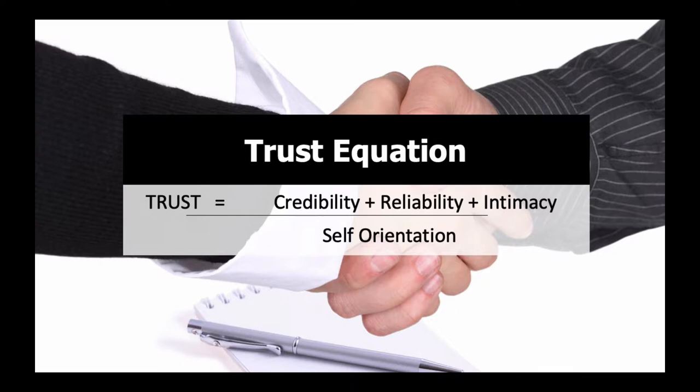The second factor is reliability: do you do the things you say you're going to do, and do you do them well? That's about quality, but also about following up with people when you said you would — can you deliver on your marketing promise? The third factor is intimacy: a deep understanding of the customer and their needs, demonstrating that you understand their business from their perspective.